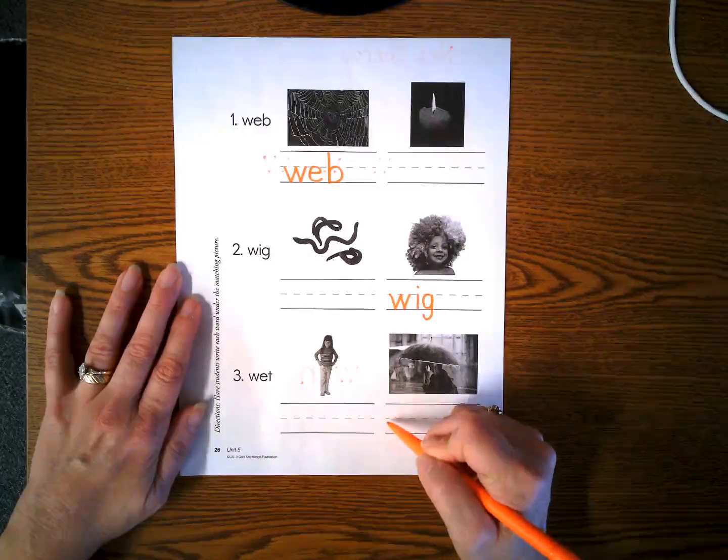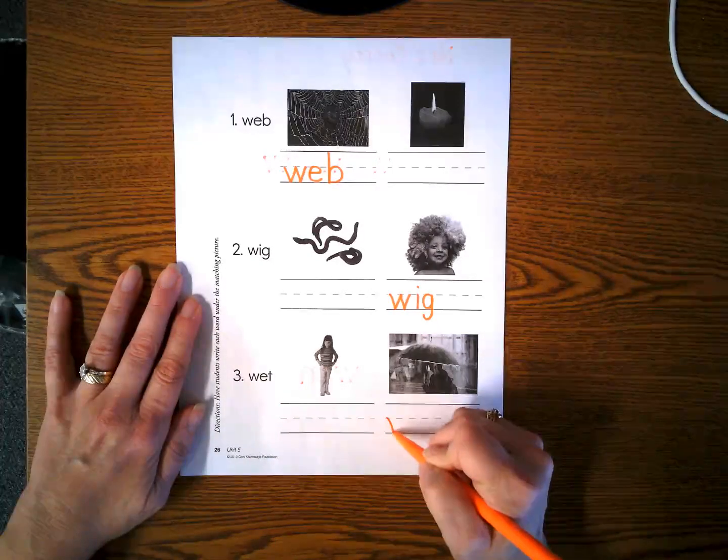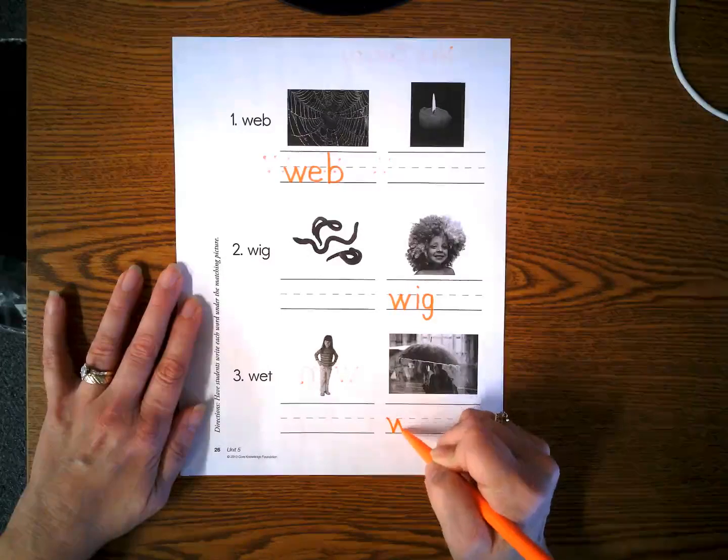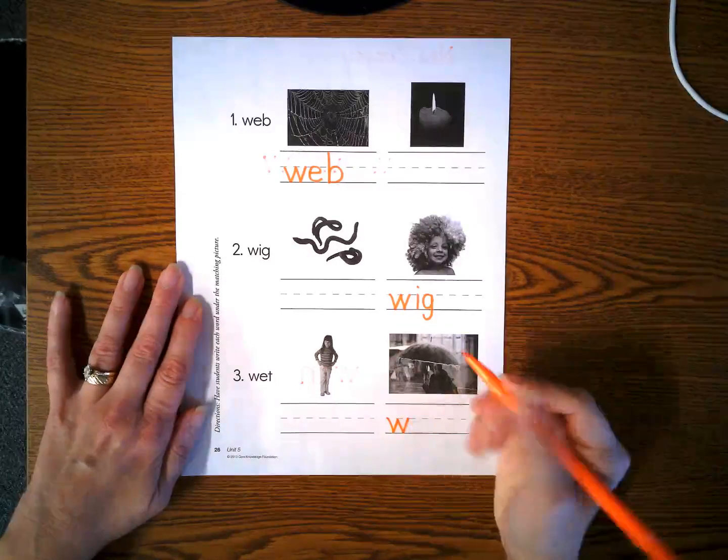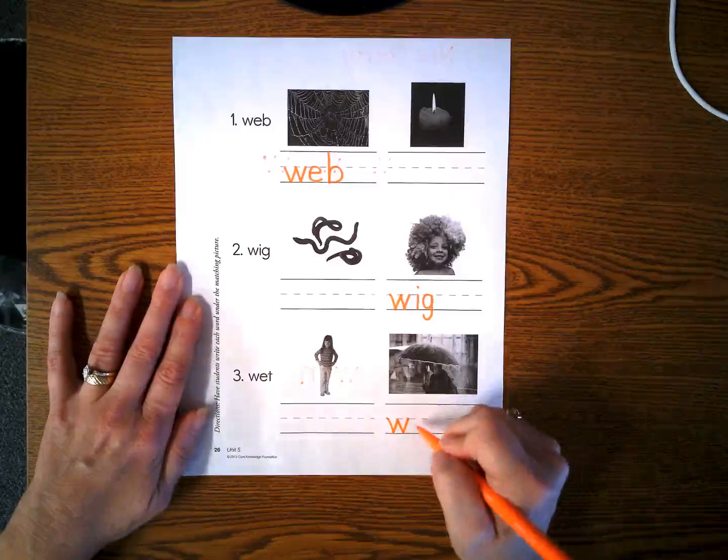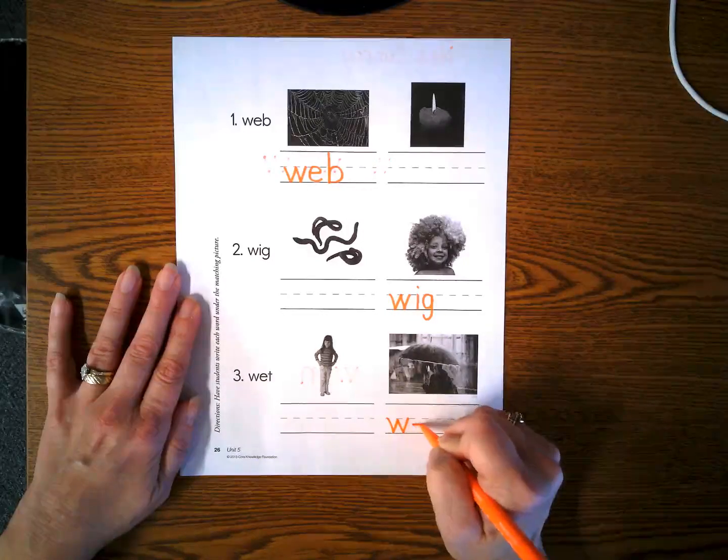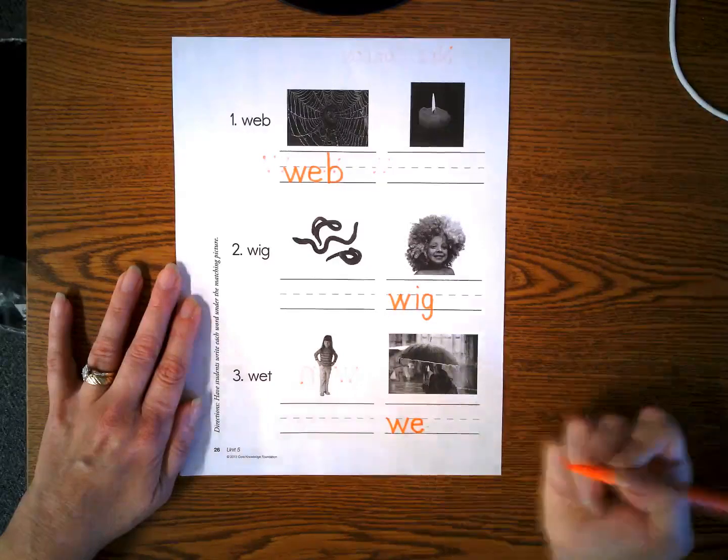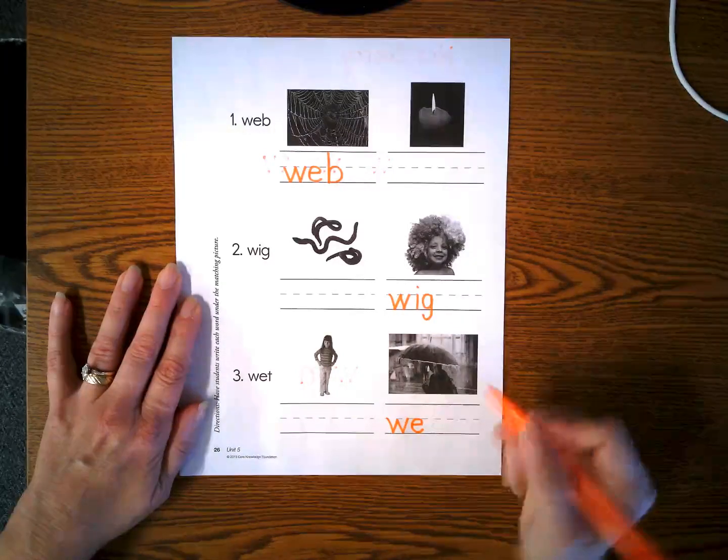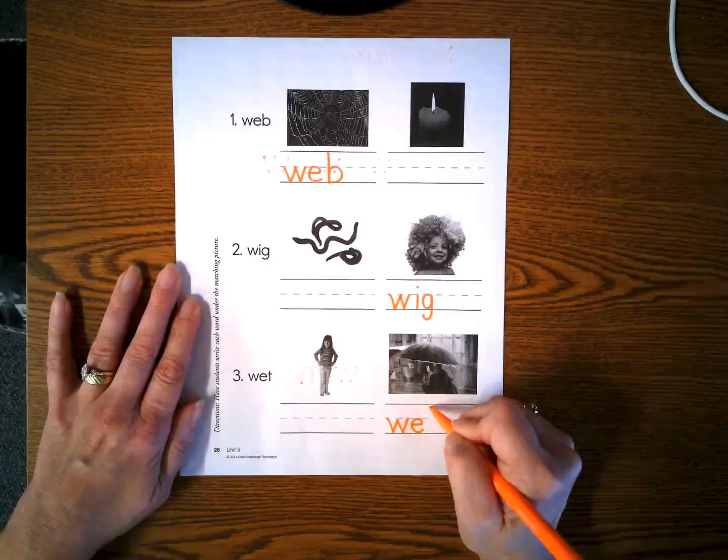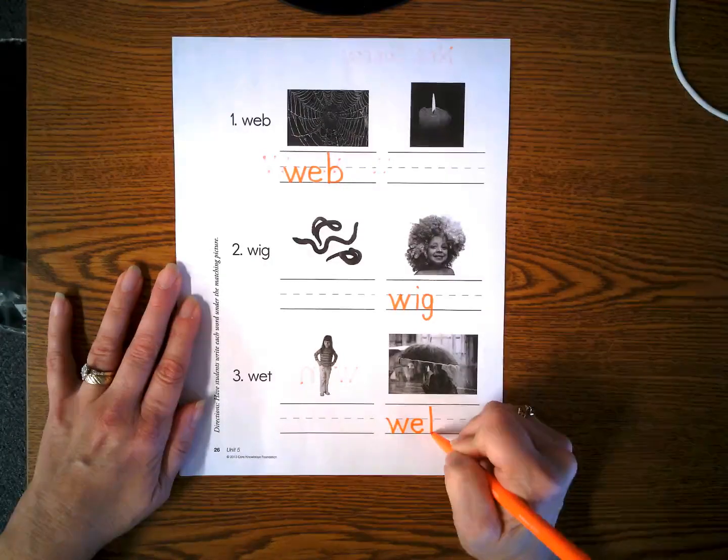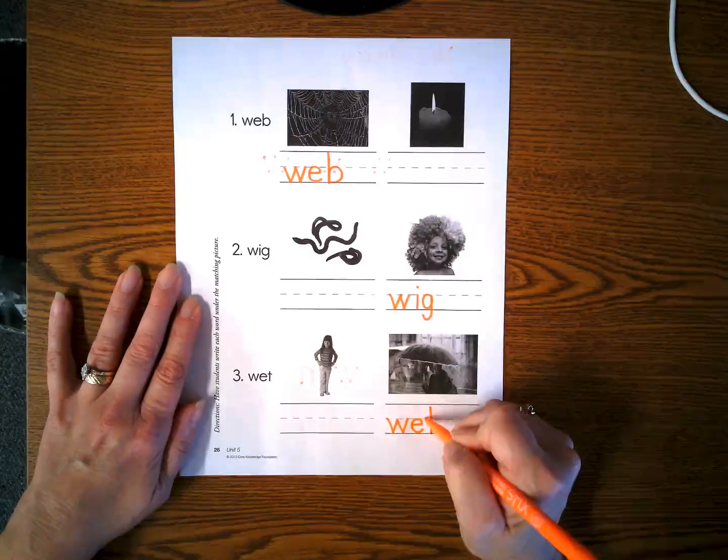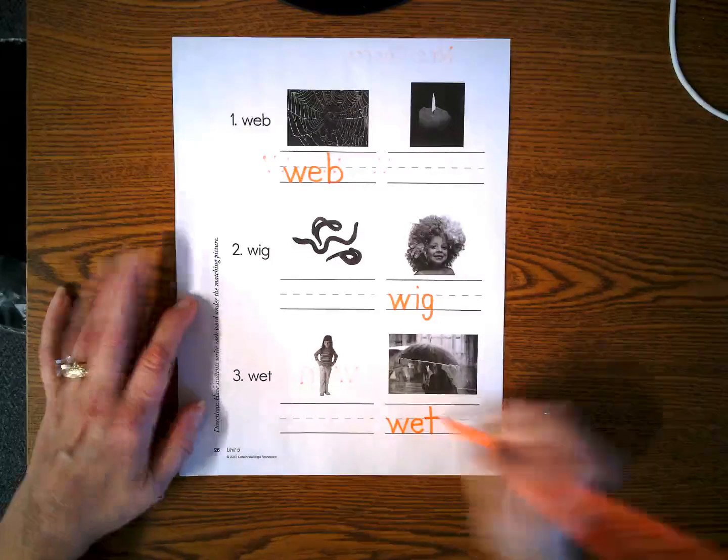Let's write wet. Diagonal line down, up, down, up. Remember that lowercase e. It's tricky. Horizontal line across, around, and t. Line down, which is a vertical line. Pick up your pencil, and horizontal line across.